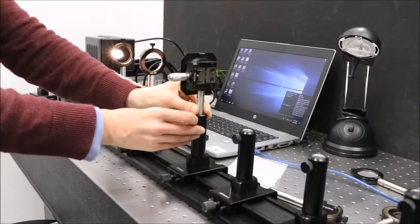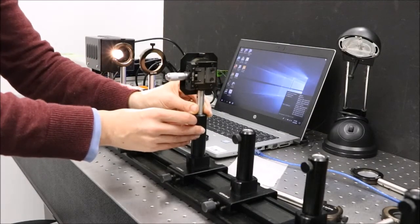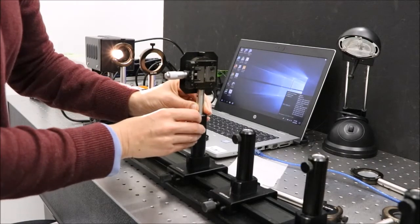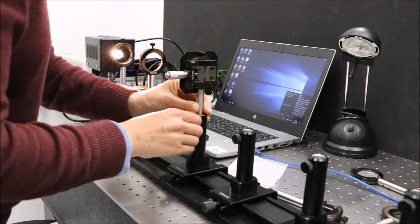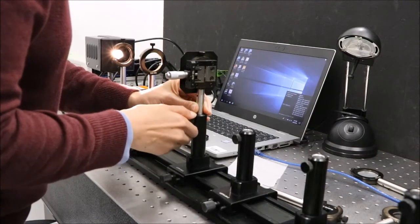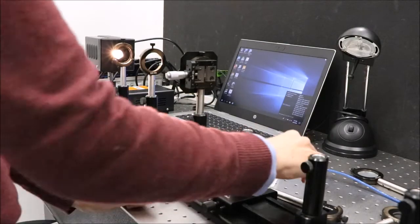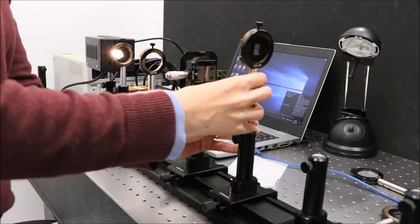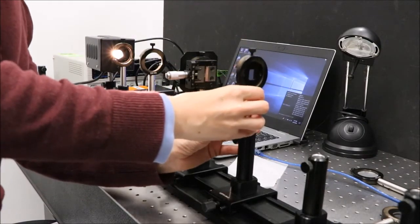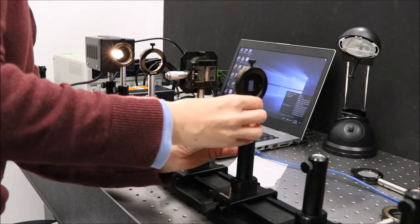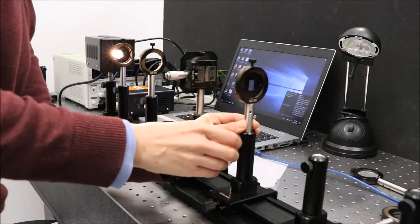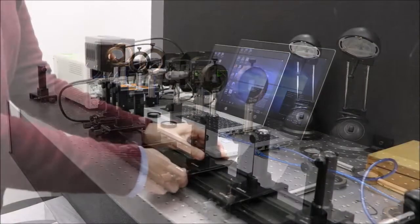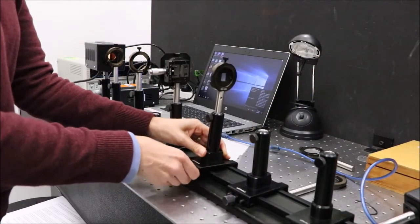I'm going to set the height of the slit and the transmission grating. We'll take these components out, leaving them on their carriers.